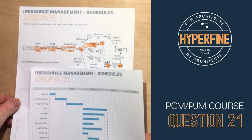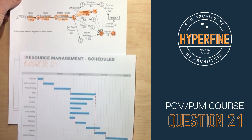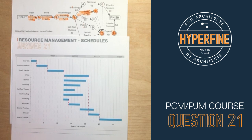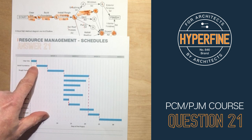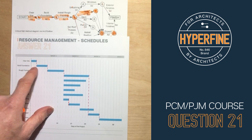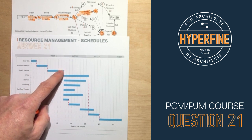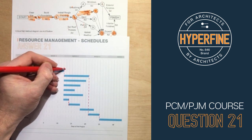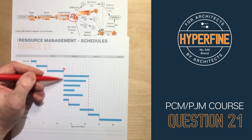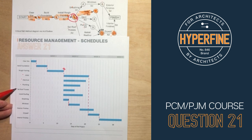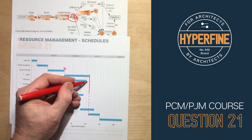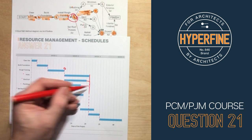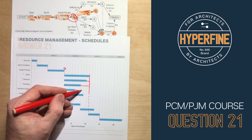It might be easier to look at this in a Gantt chart. A Gantt chart is a different type of graphical representation — basically a bar chart showing similar information. Clear site takes two days; build foundation starts when clear site ends (four days); then rough framing is six days, bringing us to milestone three. From there, HVAC, electrical, plumbing, roof trusses, roofing, and sheathing all start. HVAC is the longest at nine days; all other tasks have float — electrical one day, plumbing three days.